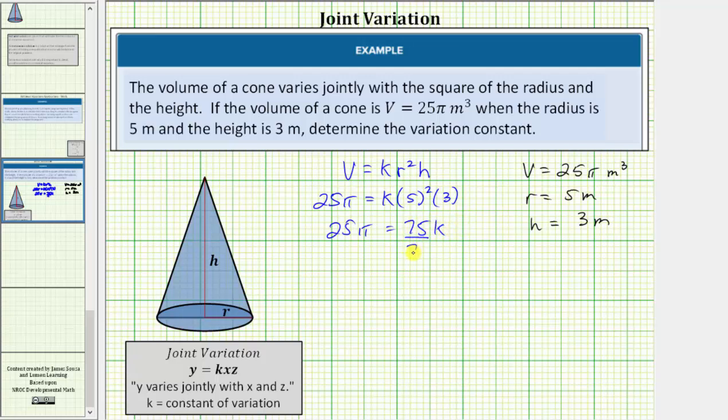To solve for k, we divide both sides by 75. On the right side, this simplifies to one k or k, so we have k equals...